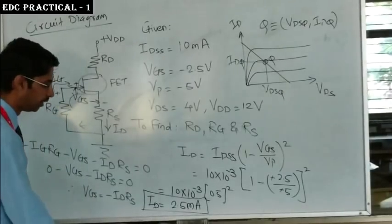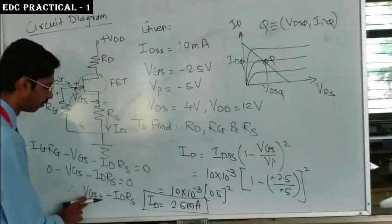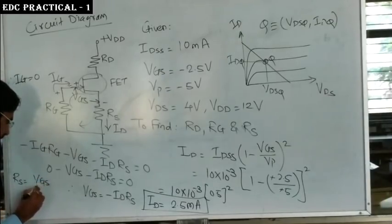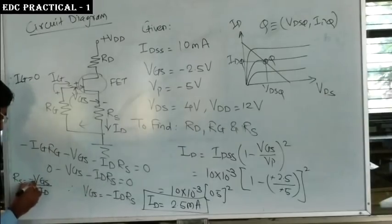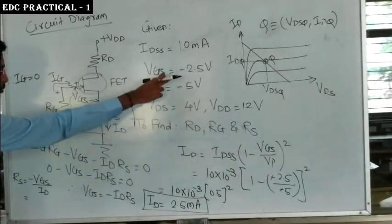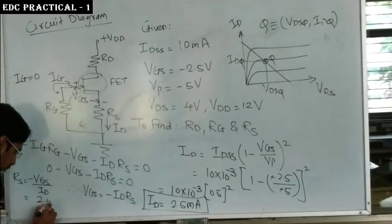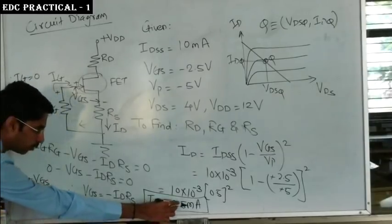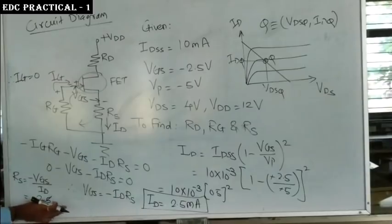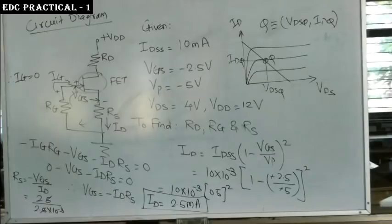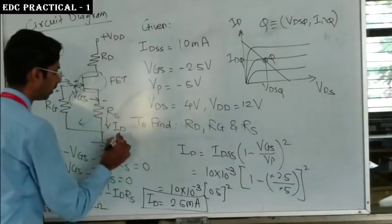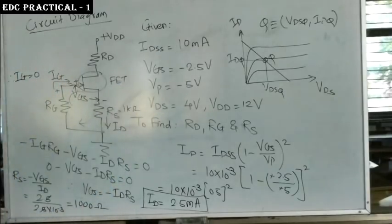Now we use this ID value to find RS. From VGS = −ID·RS, we get RS = −VGS / ID = 2.5 / (2.5×10⁻³) = 1000 Ω. So RS = 1 kΩ.